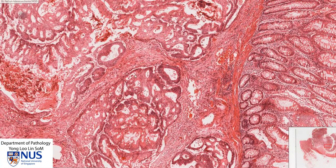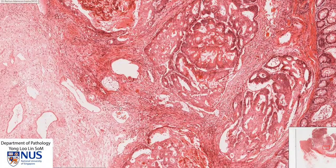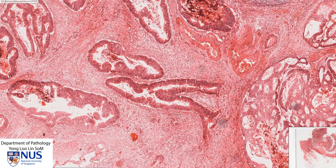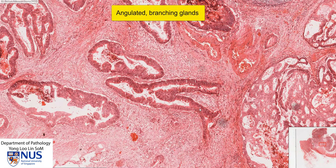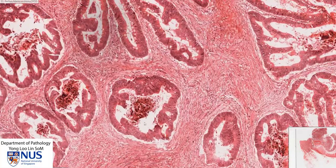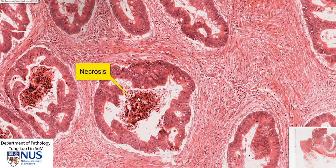We have cribriform architecture and irregular glands. Moving on to this frankly invasive area, we can see the glands are angulated and branching — they are not nice and round like the benign crypts. This is architectural atypia and complexity. In some of the neoplastic malignant glands, we can also see necrosis.